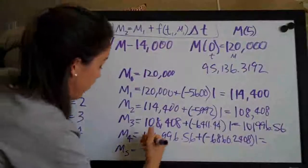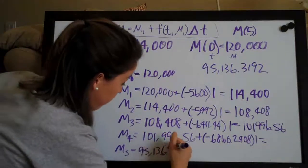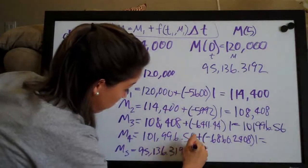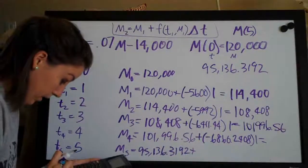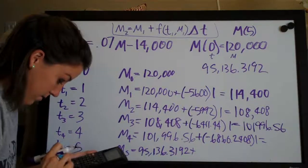So, 95,136.3192 plus, multiply that by 0.07, subtract 14,000 and we're going to get negative 7340.457656 times 1.